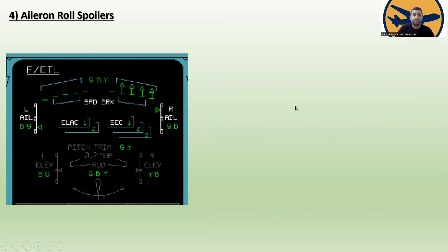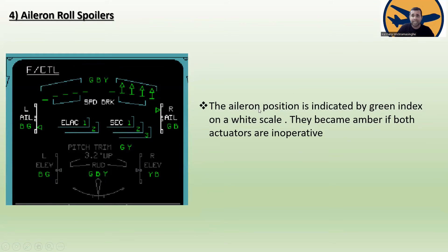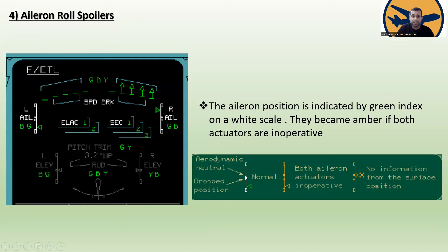Topic four is aileron roll spoilers. The aileron position is indicated by a green index on a white scale. It becomes amber if both actuators are inoperative. For the left aileron the hydraulic systems used are blue and green; for the right aileron, green and blue. In normal condition the index and scale are green and white. There is also a droop position indicator shown on the scale.